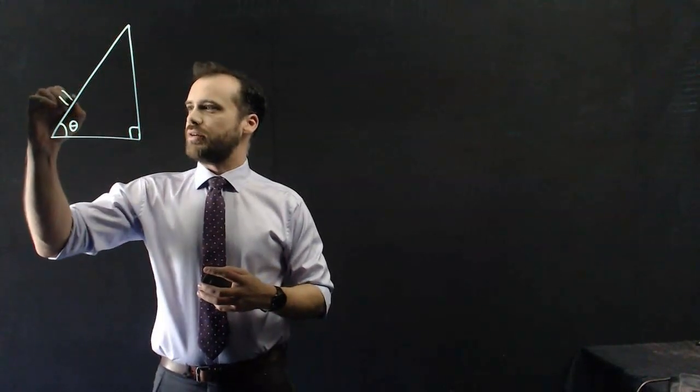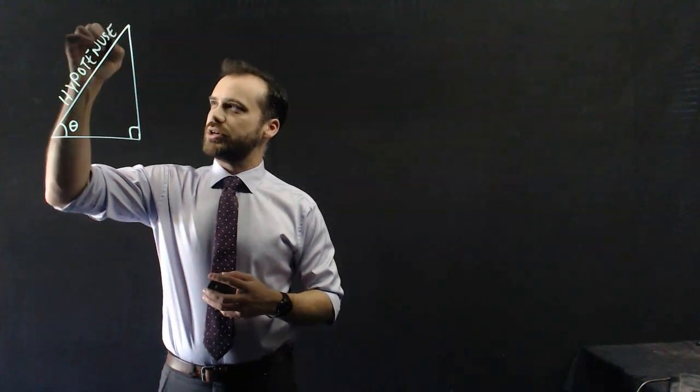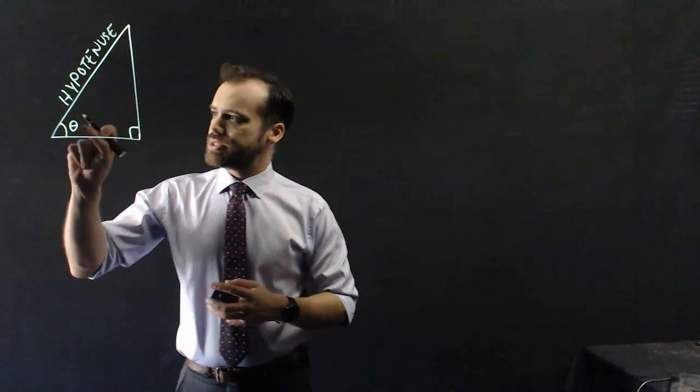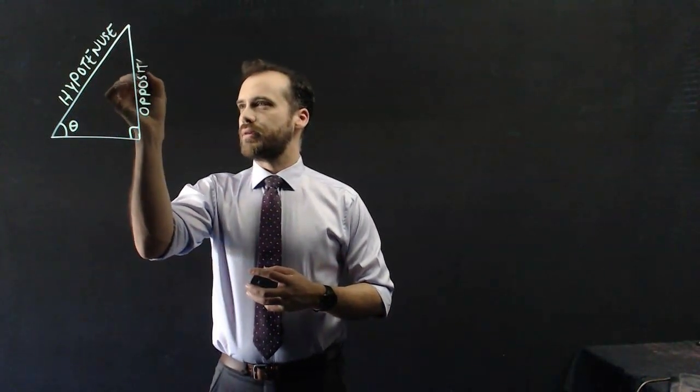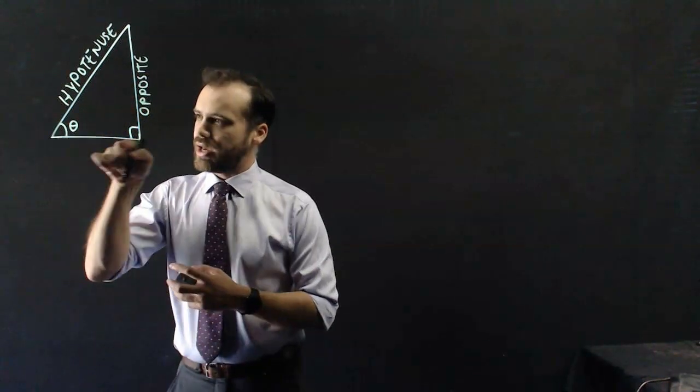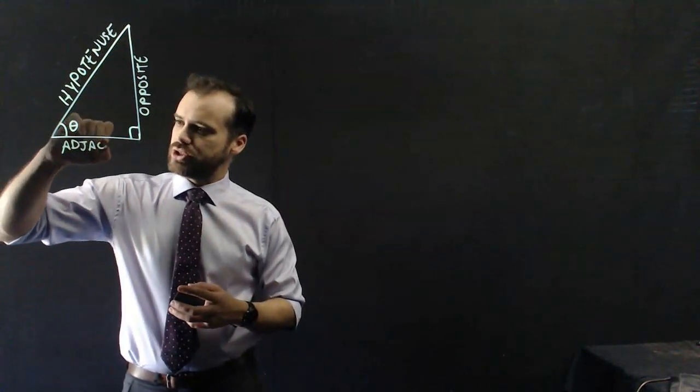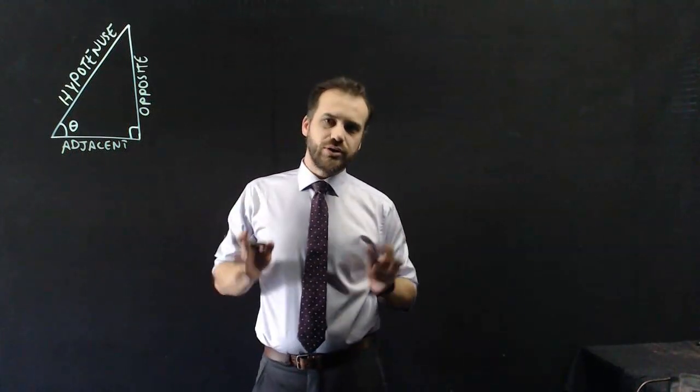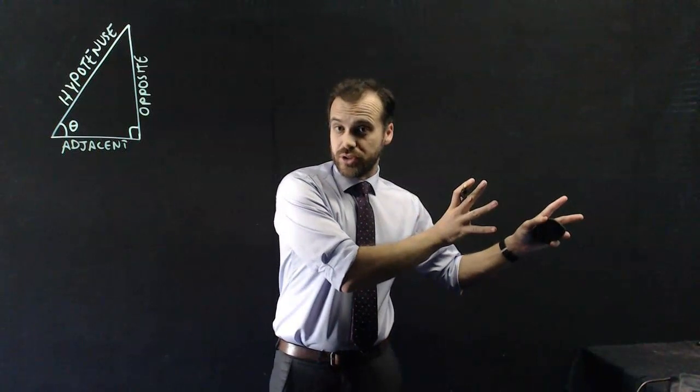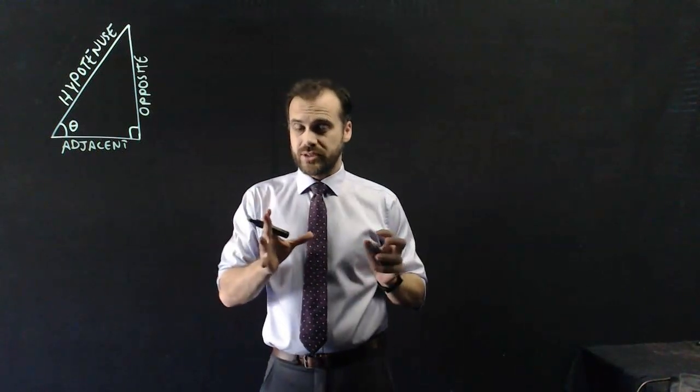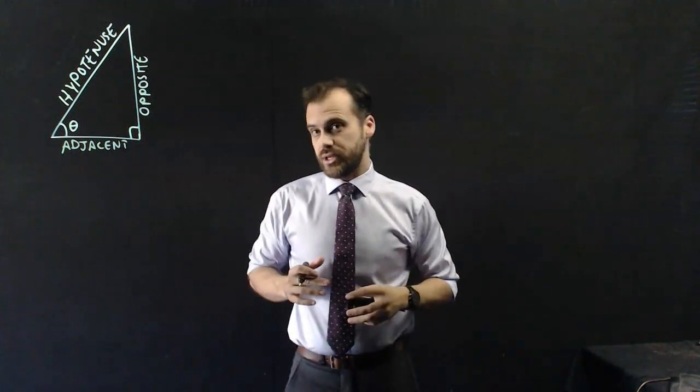The right angle opposite that, we have something called our hypotenuse. And then the other two sides we can label as one that's opposite our angle here, and one that is touching our angle but not the hypotenuse. We call that one our adjacent one. Then hopefully your teacher taught you that the trigonometric ratios are exactly that, trigonometric ratios.